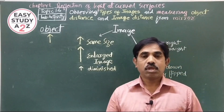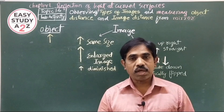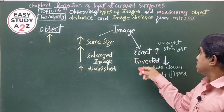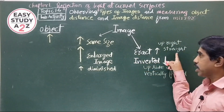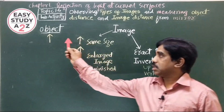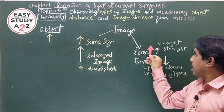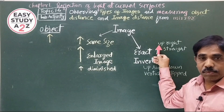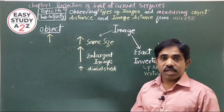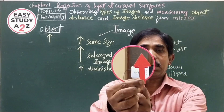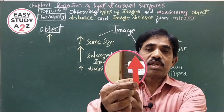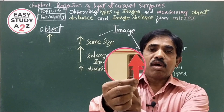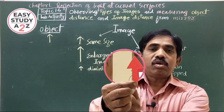We also have erect and inverted images. Erect means upright — the image is straight, just like the object. You can observe the erect image in a plain mirror, where the object is straight and upright and the image is also straight and upright. The object and image look similar.